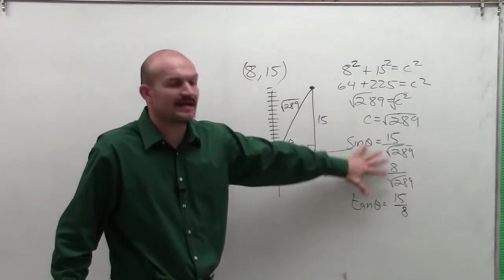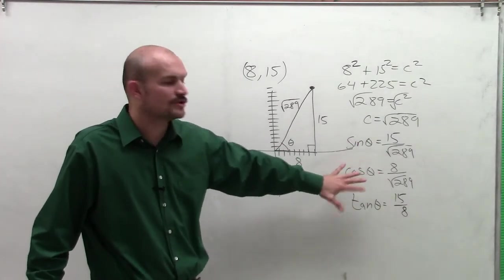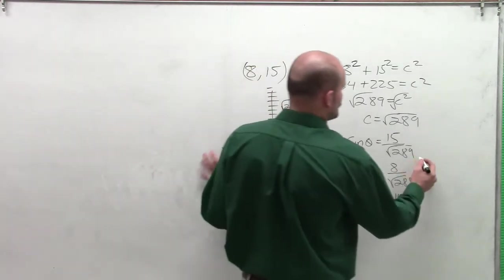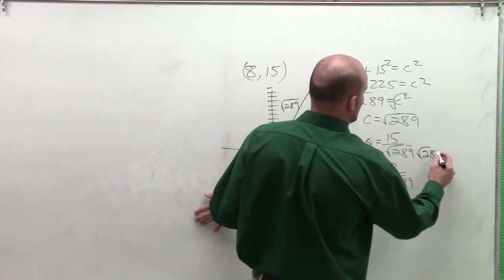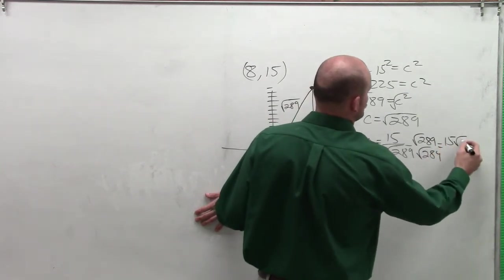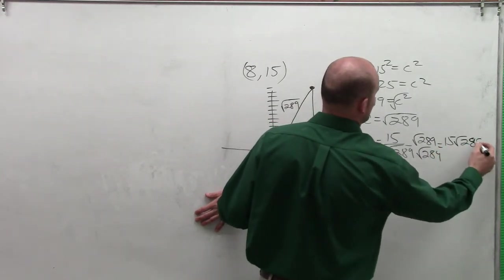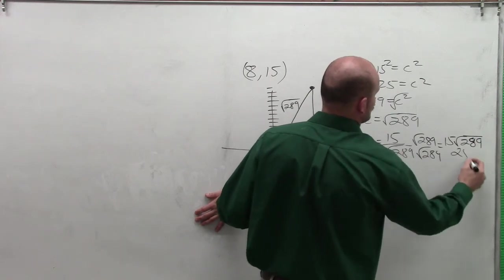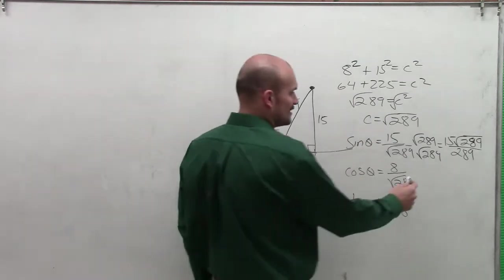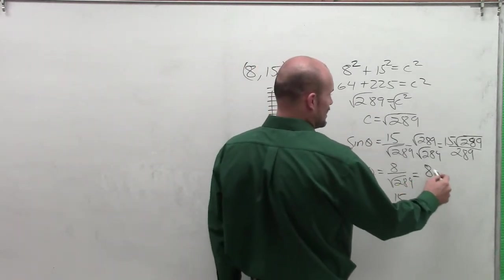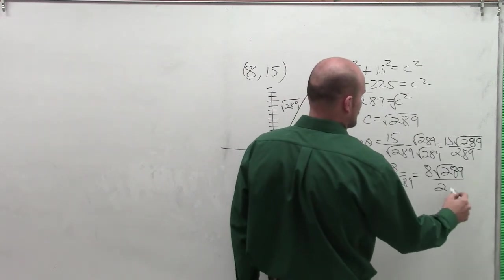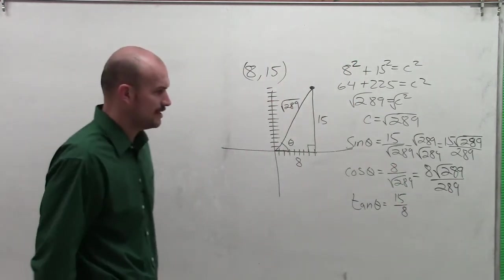Now remember, we don't want to leave our answers with radicals on the bottom. We've got to simplify them by rationalizing the denominator. To do that, multiply by the square root of 289 on the top and the bottom. You'll get 15 times the square root of 289 divided by 289. When you do this enough, you can easily rationalize the denominator, and you'll get 8 times the square root of 289 divided by 289. This problem needs no simplifying at all.